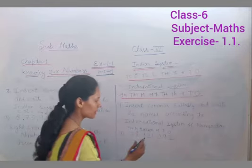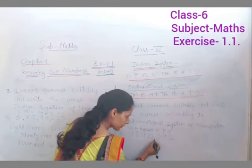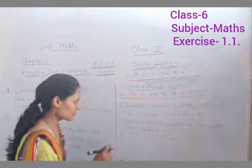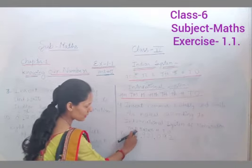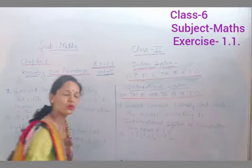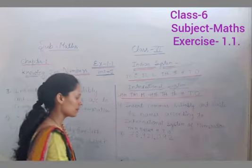That means ab commas kaise lagana hai? Yeh tinon family ke members hai. And this is thousand family and this is million family. To ise kaise likha jayega? Seventy-eight million, nine hundred twenty-one thousand, and ninety-two. Woh yahan wordings mein likhenge, according to international system of numeration.